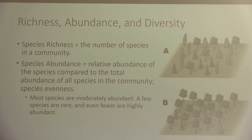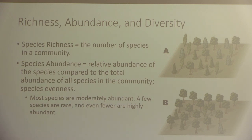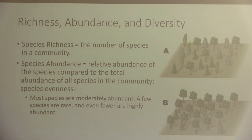A community is defined as all the organisms within a certain place at a certain time. For community ecology we're looking at the richness, abundance, and diversity of species. When it comes to species richness, we look at the number of different species in a community. For example, if outside we have starlings, crows, robins, and pigeons, that would be a species richness of four.